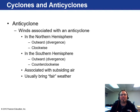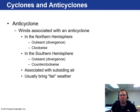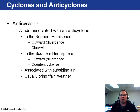An anticyclone in the northern hemisphere has winds directed outward — what we call divergence — in a clockwise fashion, and counterclockwise in the southern hemisphere. Anticyclones are associated with subsiding air being pushed down, which usually means nice weather. Thunderstorms are typically associated with low pressure zones, while nice warm sunny days with few clouds are typically associated with high pressure zones.